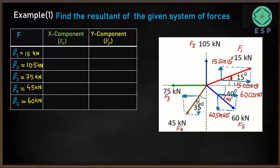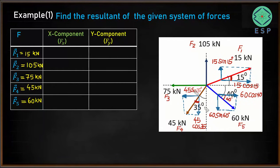For F4, since the angle is 35 degrees, the y component will be 45 cos 35° and the x component will be 45 sin 35°. So we have resolved the forces along x and y directions. F2 is acting in the y direction so there is no x component — it has only a y component. F3 is acting in the negative direction of the x-axis, so it has only an x component and no y component.